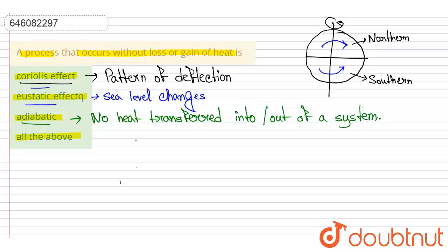So any process that occurs within a container that is a good thermal insulator will be adiabatic. So here the question says a process that occurs without loss or gain of heat, so this is the adiabatic process as we can see here and this will be our answer.